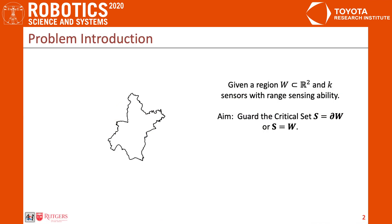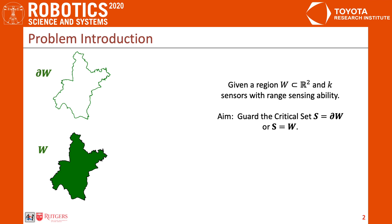The problem studied in this work can be illustrated with a straightforward example. We are given a bounded 2D polygonal region W and K indistinguishable mobile sensors with circular range sensing abilities. The task is to cover the 1D boundary of W or the 2D region W itself. They are considered as critical sets to guard, shown as green paths in the left side.